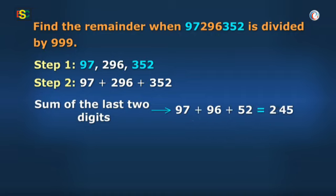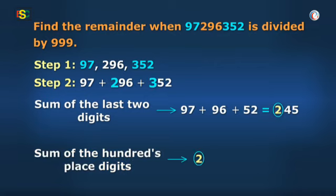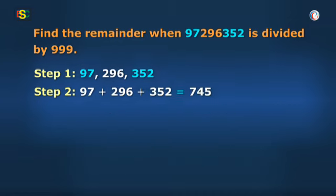Now, two will be carried forward to hundreds place digits, that is 2 and 3. And then 2 carry plus 2 plus 3 is 7, or the total sum is 745.